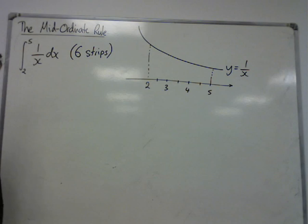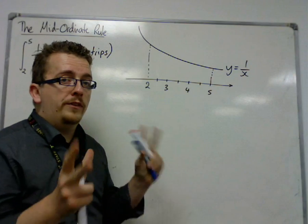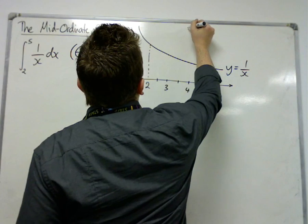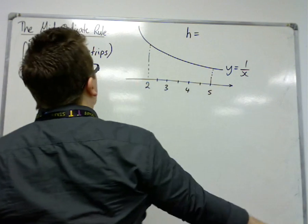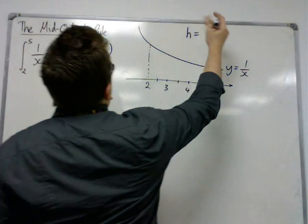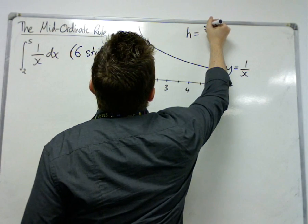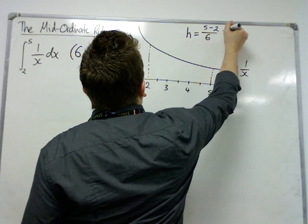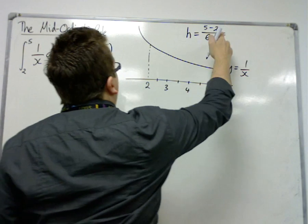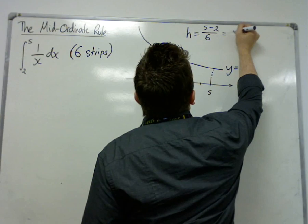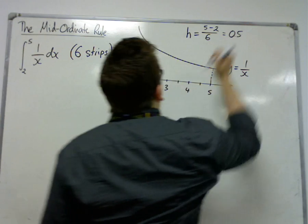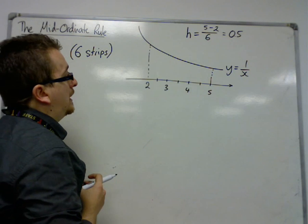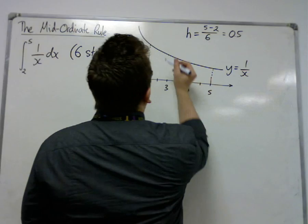So first of all, what we need to work out is how wide the strip is. The width of the strip is represented with the letter h, and can be calculated by looking at the difference between 5 and 2, and dividing it by the number of strips. So that's 3 over 6, which is 1 half. So each strip has a width of 1 half.